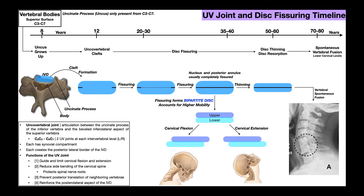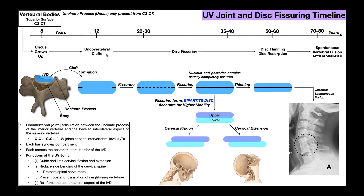Starting at about eight years old, we see the uncinate processes growing superiorly from cervical vertebra C3 through C7. The uncinate processes are not present at birth — they actually grow upward on the left and right sides of the intervertebral disc that sits on top of the vertebral body. By age 12, the uncinate processes have formed and start inducing the formation of what we call uncovertebral clefts.